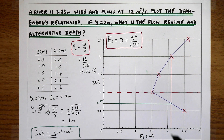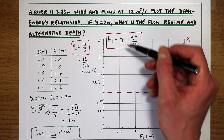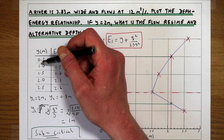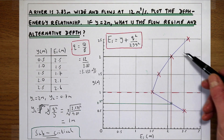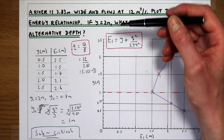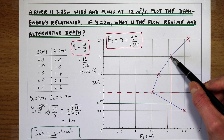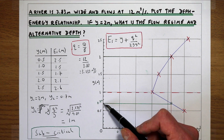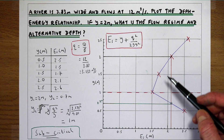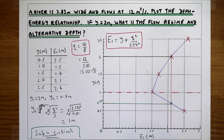To summarise: from a given discharge and channel width we used the specific energy equation to calculate specific energy at various flow depths and plotted the relationship between energy and flow depth. At a 2-meter flow depth, we showed that the alternative flow depth at the same energy level is 0.7 meters. We also confirmed that the flow is sub-critical because the flow depth exceeds the critical flow depth, and that if the flow were super-critical the flow depth would be 0.7 meters.